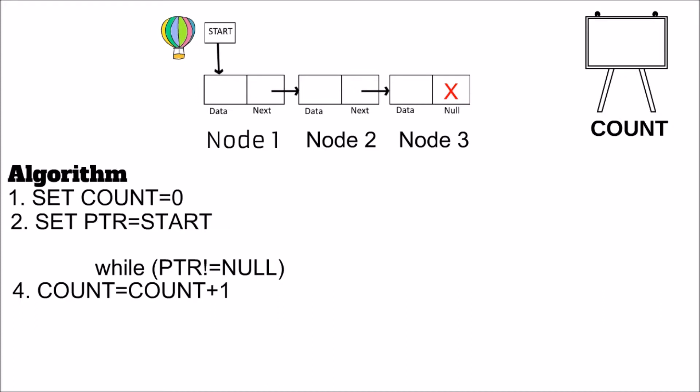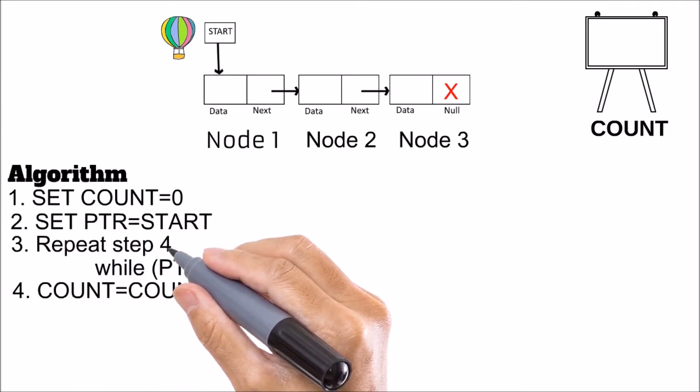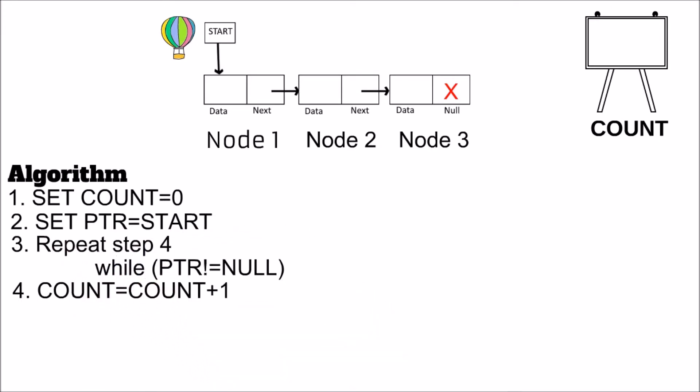That means the count was 0 when the hot air balloon named PTR is on start. But as we progress and we don't find PTR equal to null, we will increment our count.